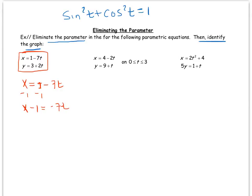And then I'm going to divide by negative 7, and now I have that t equals x minus 1 divided by negative 7.